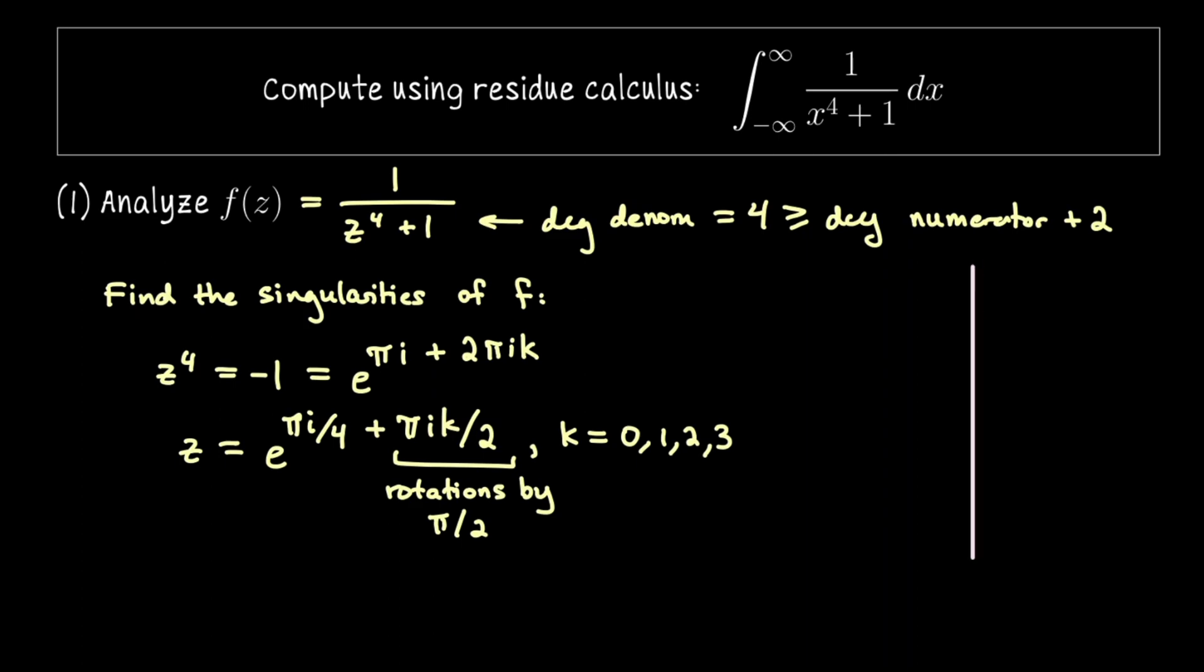Let me graph these in the complex plane. Each lives on the circle of modulus 1. When k equals 0 we have rotated around the circle by pi over 4. That puts us about here. I'm going to name the singularity z naught and to write it concisely that is 1 plus i all over the square root of 2.